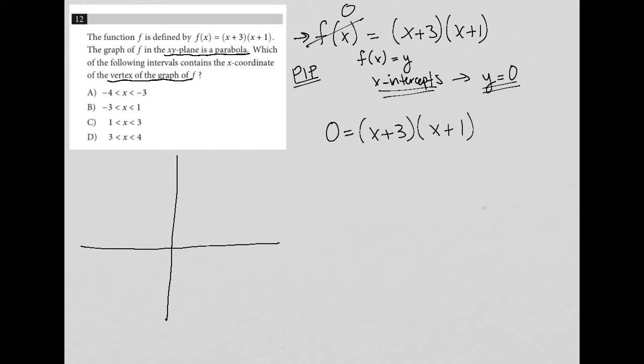Whenever I have the product of binomials equal to 0, in order to figure out the x values that make the statement true, I separate them and set each one individually equal to 0. So in this case, x+3 = 0 and x+1 = 0.